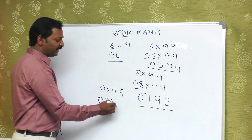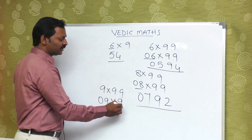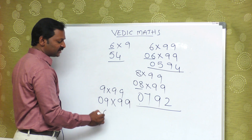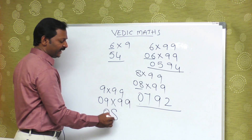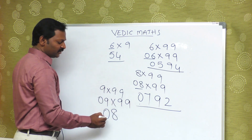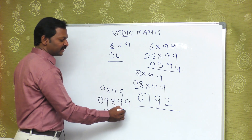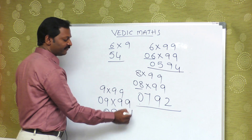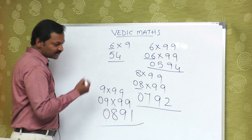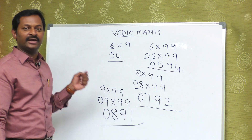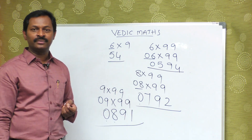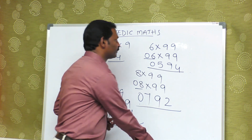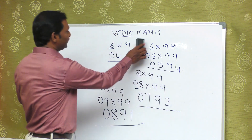This is nothing but 09 into 99. The final answer is 0891. For 0, the combination is 9; for 8, the combination is 1. So the answer is 0891. Have you understood?